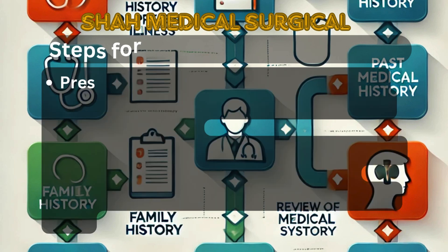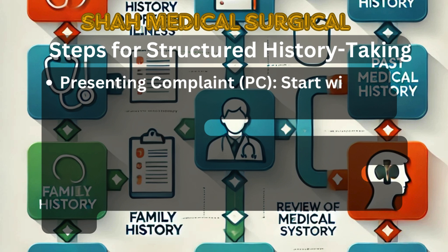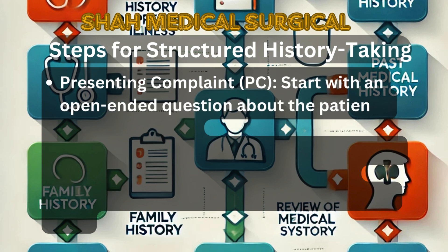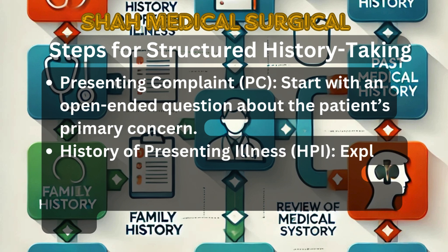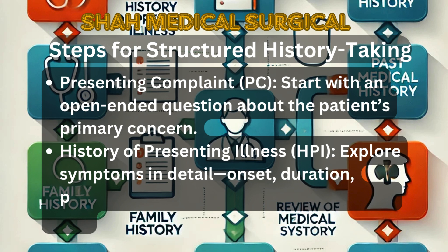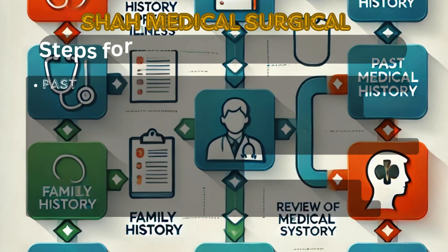Steps for structured history taking. To ensure a thorough and systematic process, follow these steps. First, presenting complaint: begin with an open-ended question about the patient's primary concern and let them describe their symptoms in their own words. Second, history of presenting illness: delve into the symptoms, focusing on their onset, duration, progression, severity, and how they impact daily life.